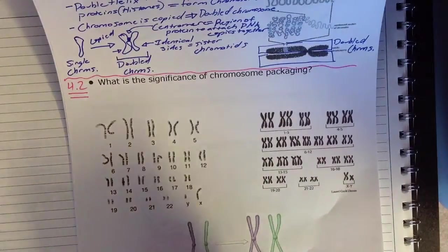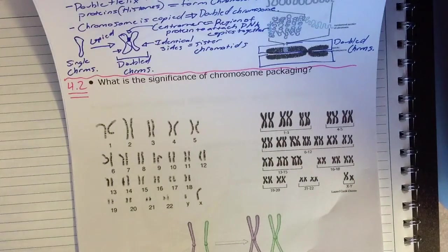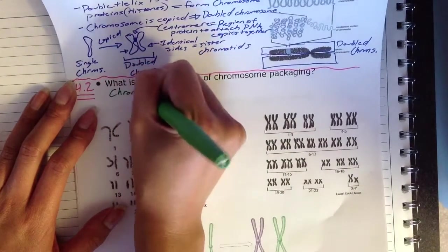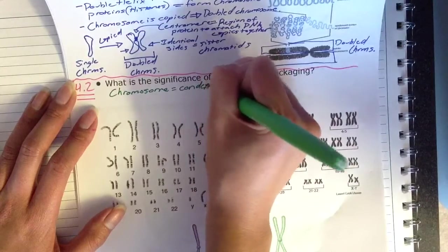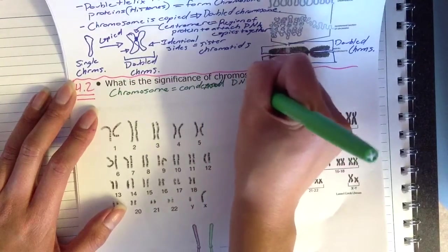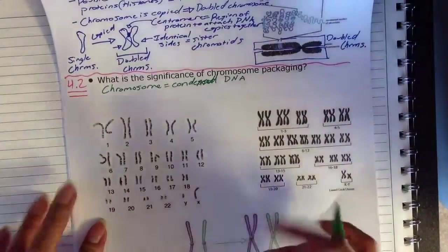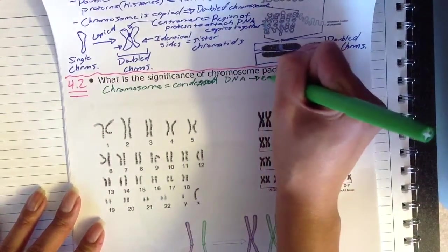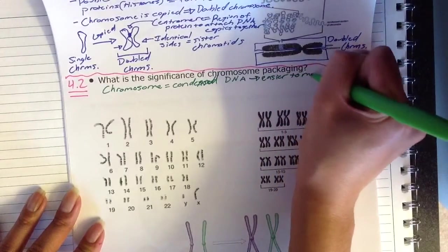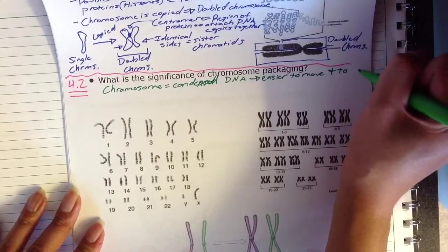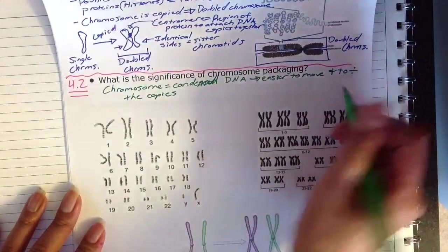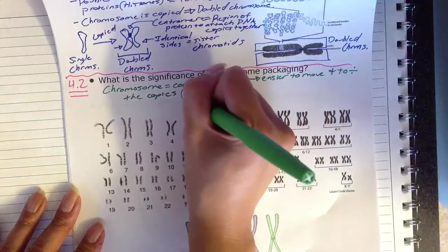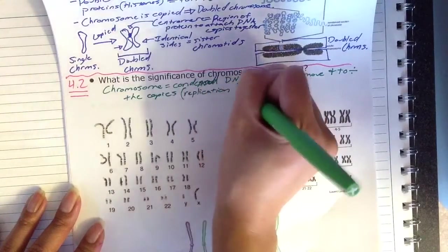So to start us off, what is the significance of chromosome packaging? A chromosome is going to be a condensed form of DNA. The reason why we want to condense the DNA is because this actually ends up making it easier to move and to divide the copies. And when we talk about division in biology, just keep in mind that that means the same thing as replication or multiplication.